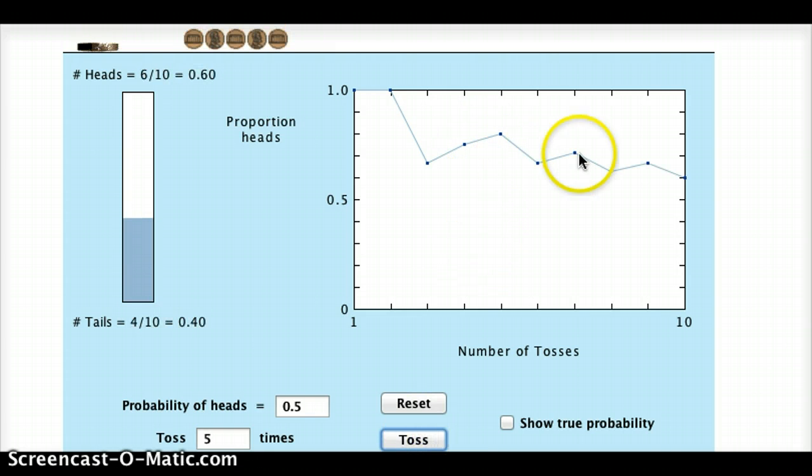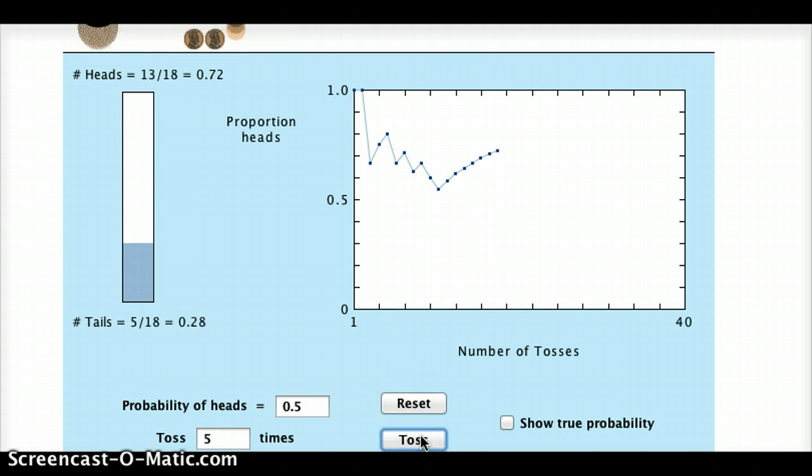The more we toss, though, the more this number tends to approach 50%. That time we had three tails and only two heads. If we toss again, we would expect it to eventually climb back down. In here, it jumped up a little, just by chance. We ended up having one tail and four heads. But the more we toss it, the more that number should approach 50%.